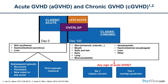Graft-versus-host disease is the main immunologic complication that happens after an allogeneic stem cell or bone marrow transplant — meaning a transplant where a patient is receiving cells from a donor. Historically, the differentiation between acute and chronic graft-versus-host disease had been made at day 100. Clinical evidence before day 100 was considered acute, and after day 100 was considered chronic.